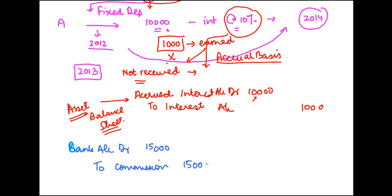So let's say you received commission of 15,000, out of which 10,000 was due for 2012-13 and 5,000 was due for 2013-14.